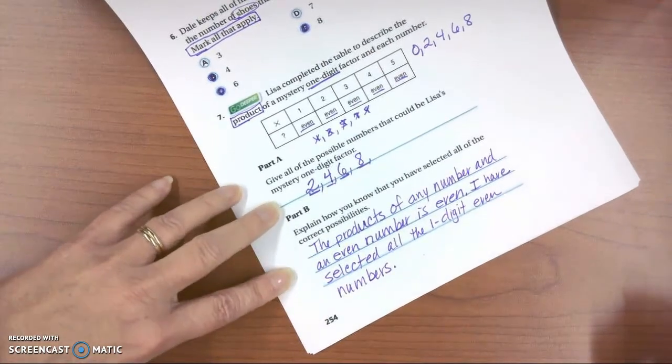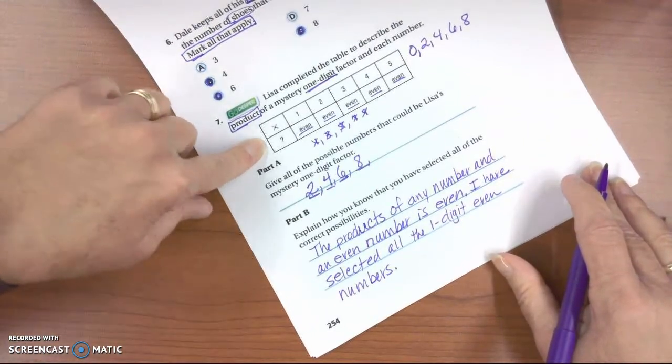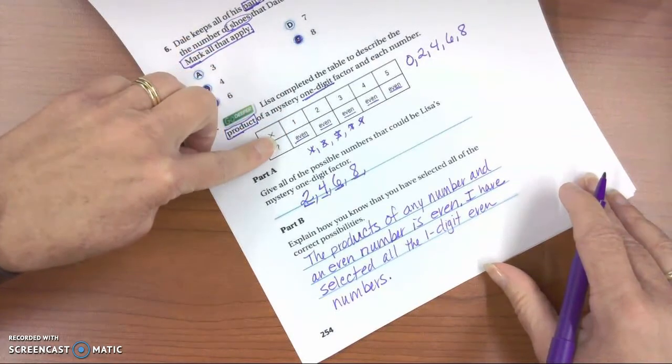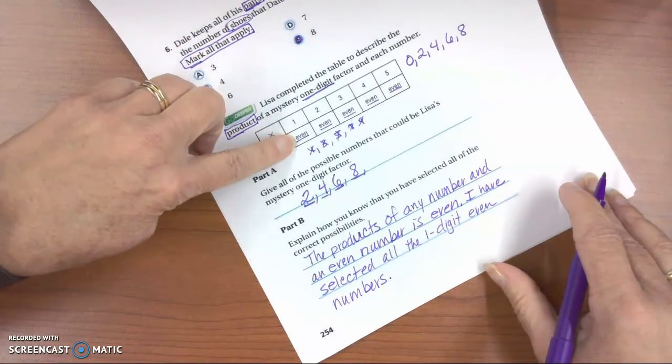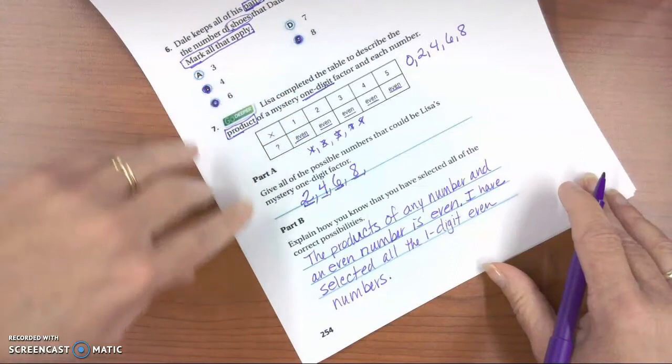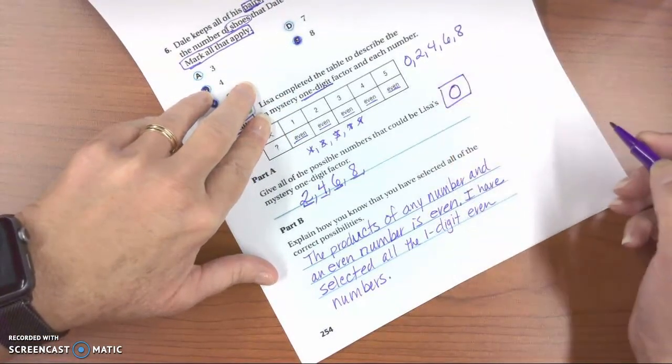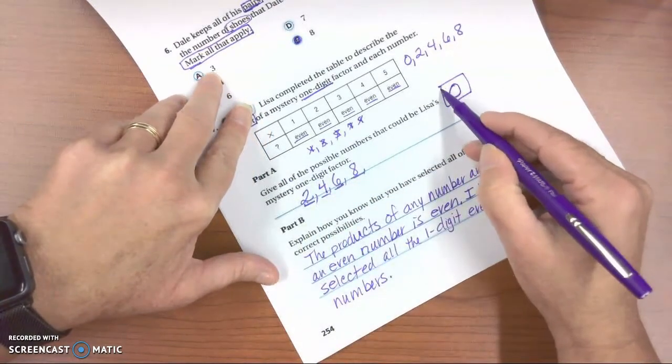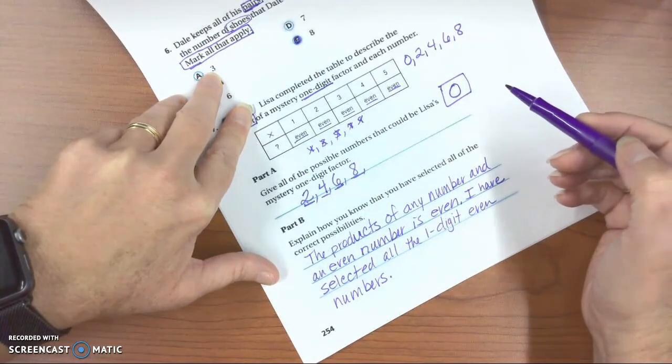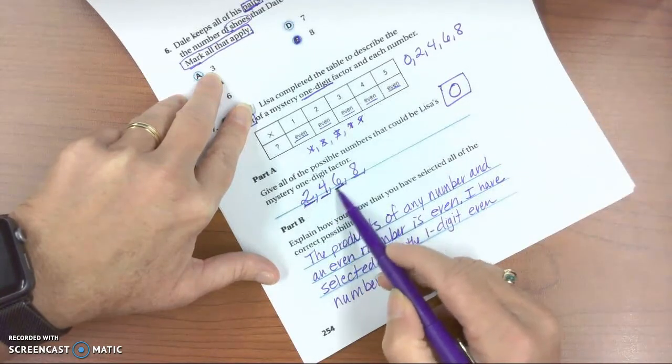So the product of any number, I have selected all the one-digit even numbers. So we wrote in complete sentences. This is how you would answer that problem. I tested it out to make sure it was true, and as soon as I got an odd number answer, I knew that that single digit would not work. We didn't try zero, even though we know zero is even, and according to the zero property, zero times any number is zero. So those would all be even as well. If you wanted to add that, I don't think the teacher would be upset about that. But these are the answers we're looking for. That's the end of part two.